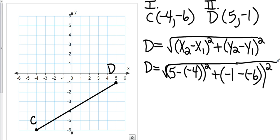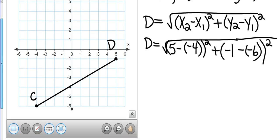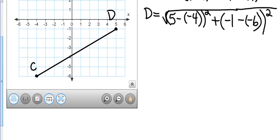So let me scroll down a little bit. Clean it up a little. I have my big square root sign. Minus a minus is plus. So that's going to be 5 plus 4. So that's going to give me 9. And then I square that. Negative 1 minus a negative 6 is going to be negative 1 plus 6, which is 5. And I'm going to square that.